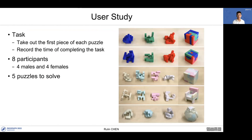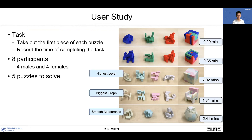We conducted a user study to learn how difficult it is for general users to play our high-level interlocking puzzles. The task of each participant was to take out the first piece of each puzzle. We recorded the time to complete the task. We recruited 8 participants — 4 males and 4 females — and prepared 5 puzzles ranging from Level 4 to Level 16, with one having smooth appearance. We found that solving time is not only related to the level of difficulty, but also to the size of the disassembly graph and appearance complexity.